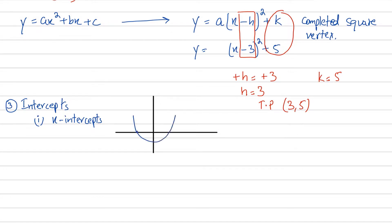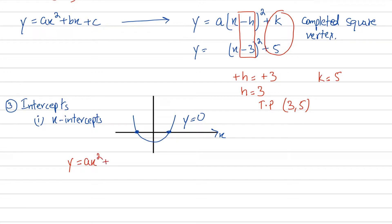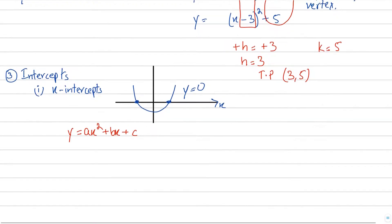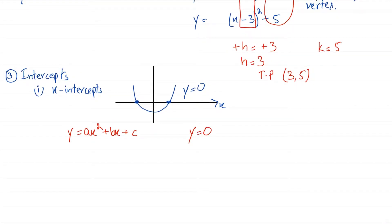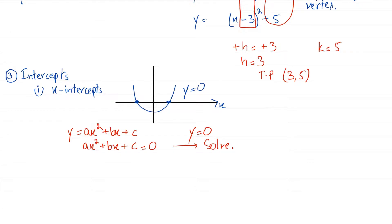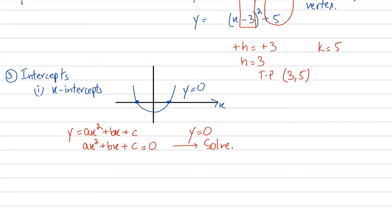To find where the curve cuts the x-axis, we set y equal to zero. So we take ax squared plus bx plus c equals zero. To solve this quadratic equation we have two methods. The first method is factorization, which we call middle term breaking. This is something we start learning in grade 8 — for as long as there is math, there will be middle term breaking.